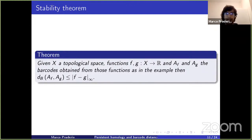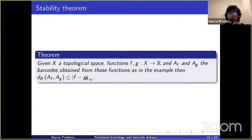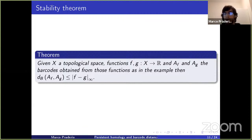The important thing about this distance is that there exists a theorem known as the stability theorem: given a topological space X and functions f and g from X to R, denoting by A_f and A_g the barcodes obtained by the Morse filtration, the bottleneck distance between these two barcodes is less than or equal to the L-infinity distance between f and g. Usually this is proven under much stronger conditions on f and g, but we will see that using category theory we can prove this without any extra conditions.